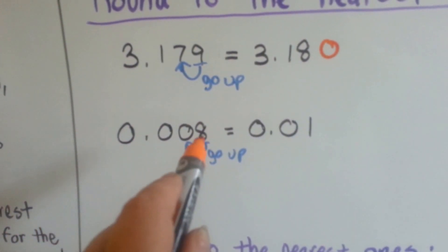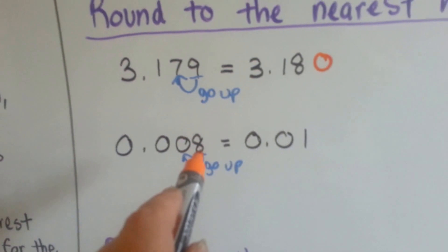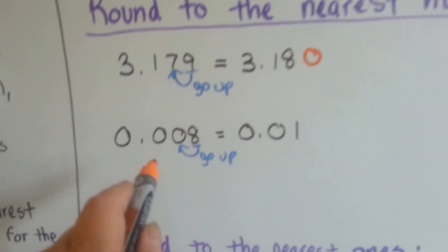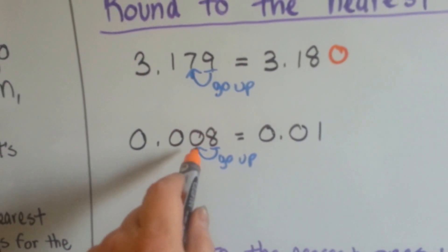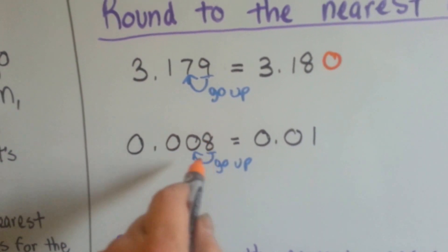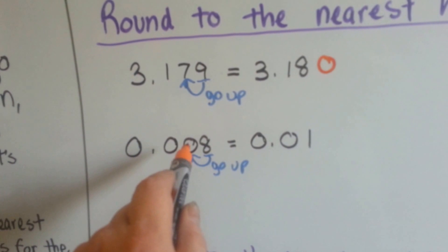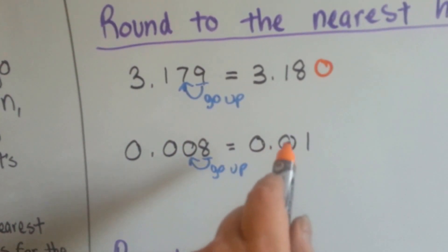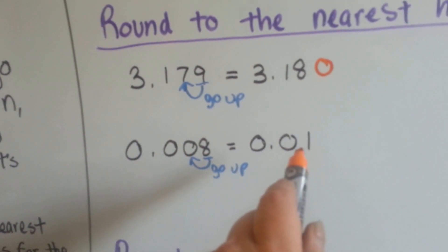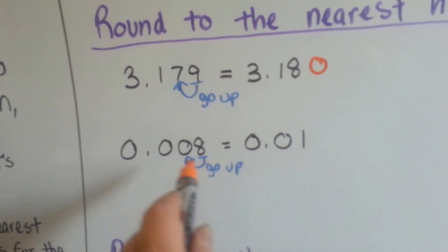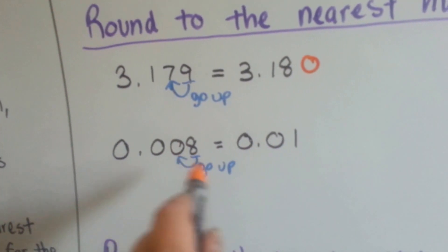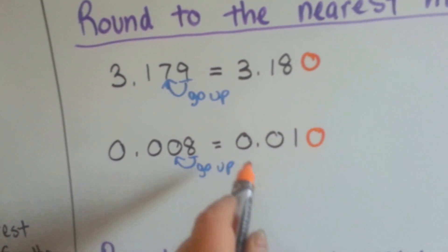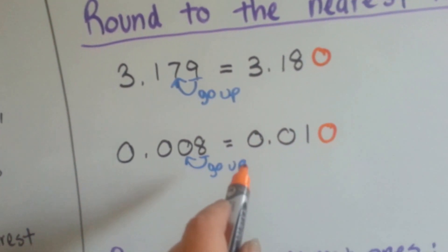Here we have eight thousandths, and if we're rounding to the nearest hundredth place — that's this place — the eight tells the zero to go up to one. So it becomes point zero one, or one hundredth. We could have put our zero where the eight was, but we didn't have to.